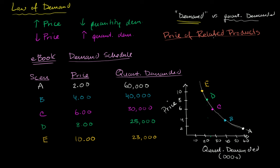Now, what would happen if these things changed? Imagine other ebooks' price goes up. So what will that do to our price-quantity demanded relationship? If other ebooks' prices go up, now all of a sudden my ebook, regardless of what price point we're at, is going to look more desirable.